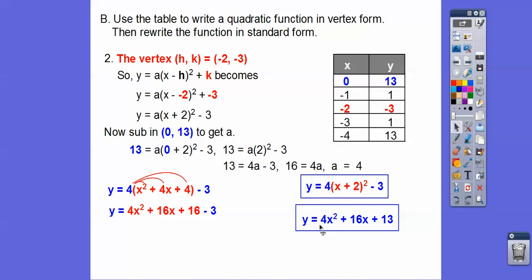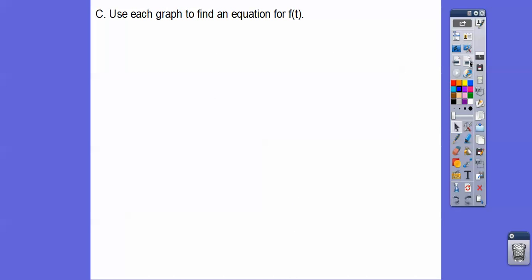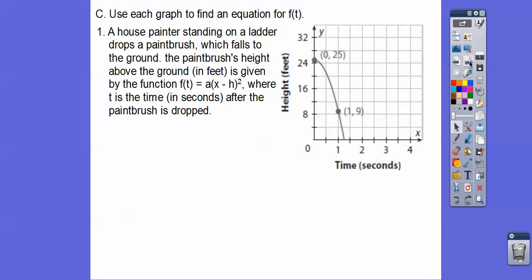All right, and then in the next module, we're going to learn how to take this answer and convert it back to vertex form, but that's not until module 7, I think, anyways. All right, so use each graph to find an equation for f of t. f of t is just like f of x, except this is t right here. They put x right there, but it's actually t, so t standing for time in seconds right here.